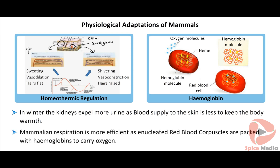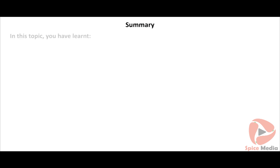Mammalian respiration is more efficient compared to other vertebrates, as red blood corpuscles lack a nucleus and are fully packed with hemoglobins to carry oxygen.